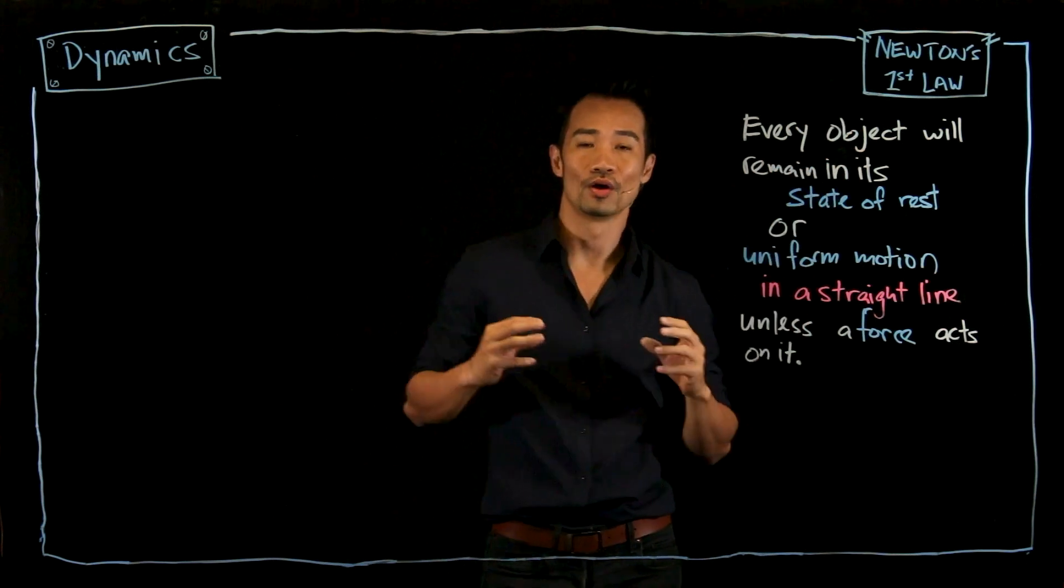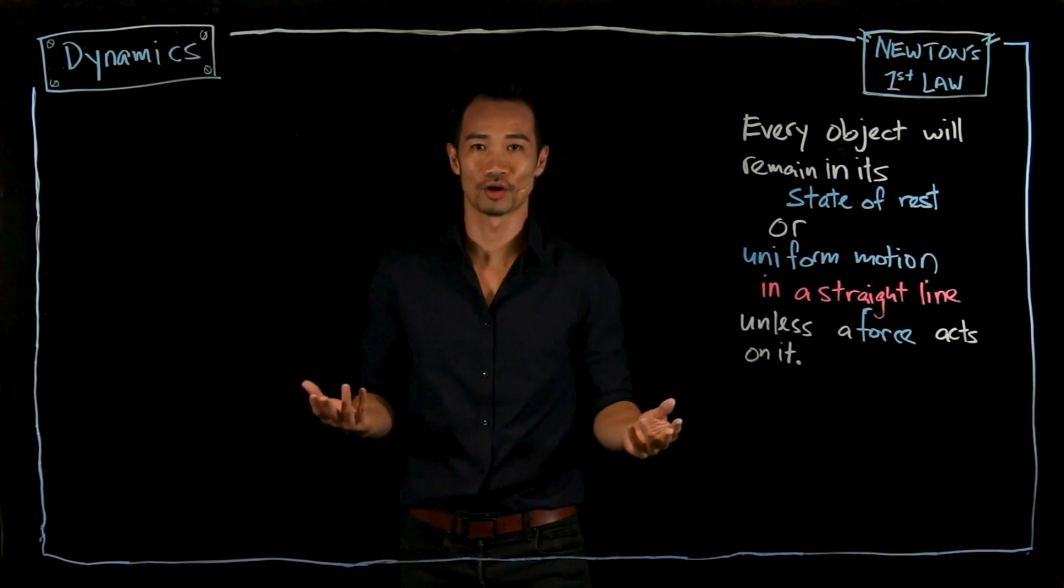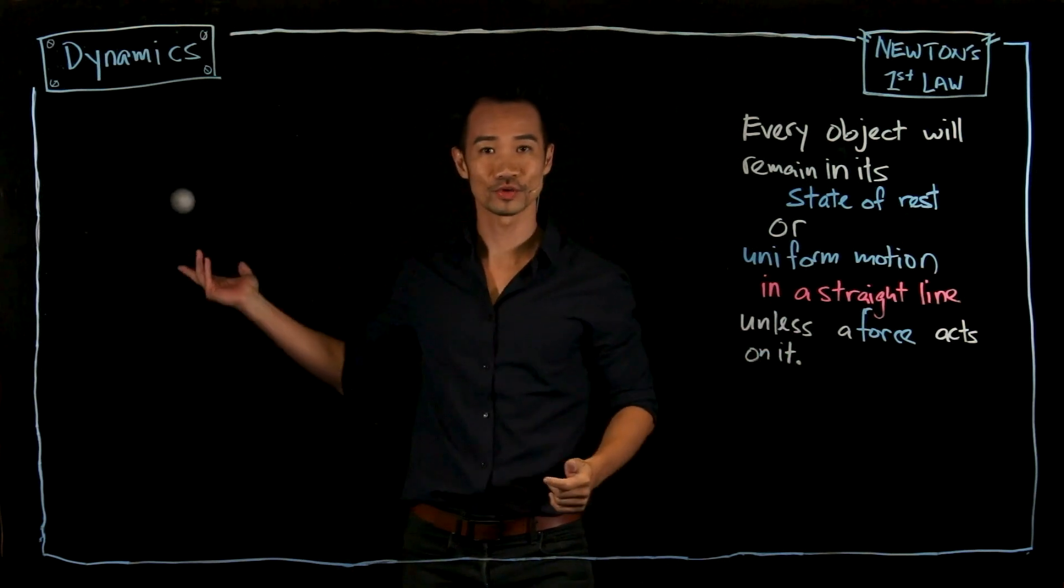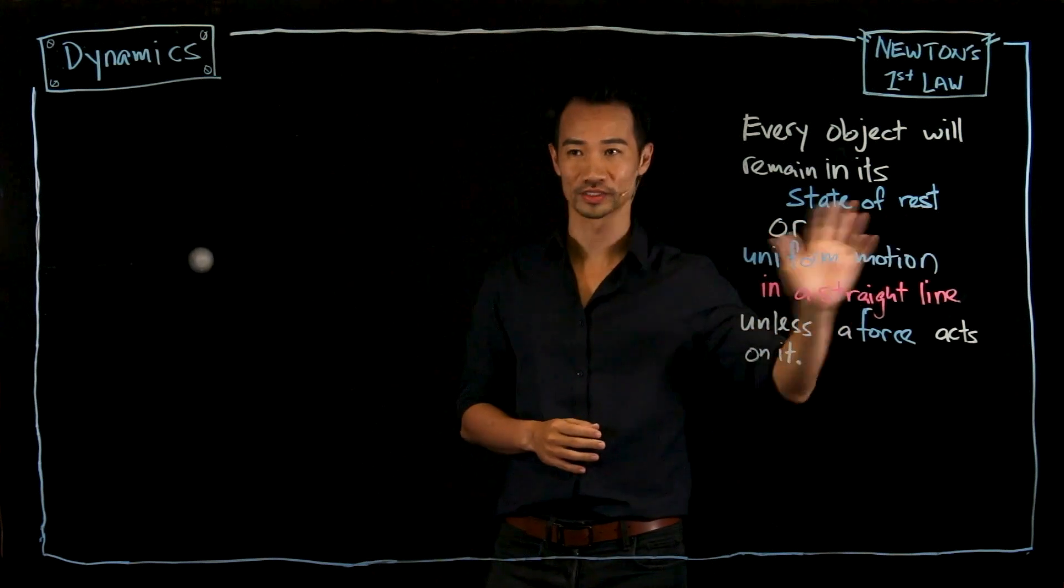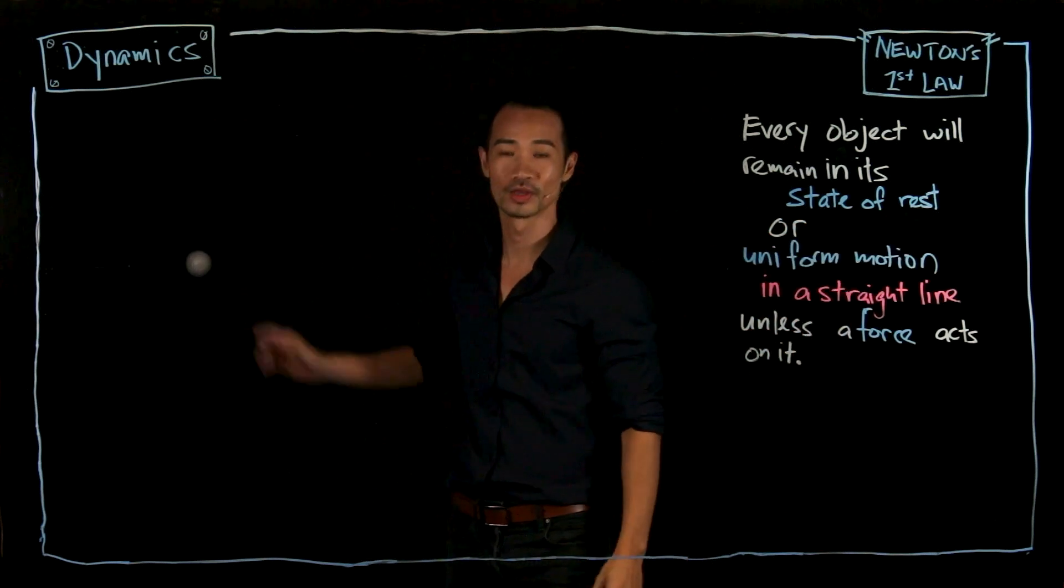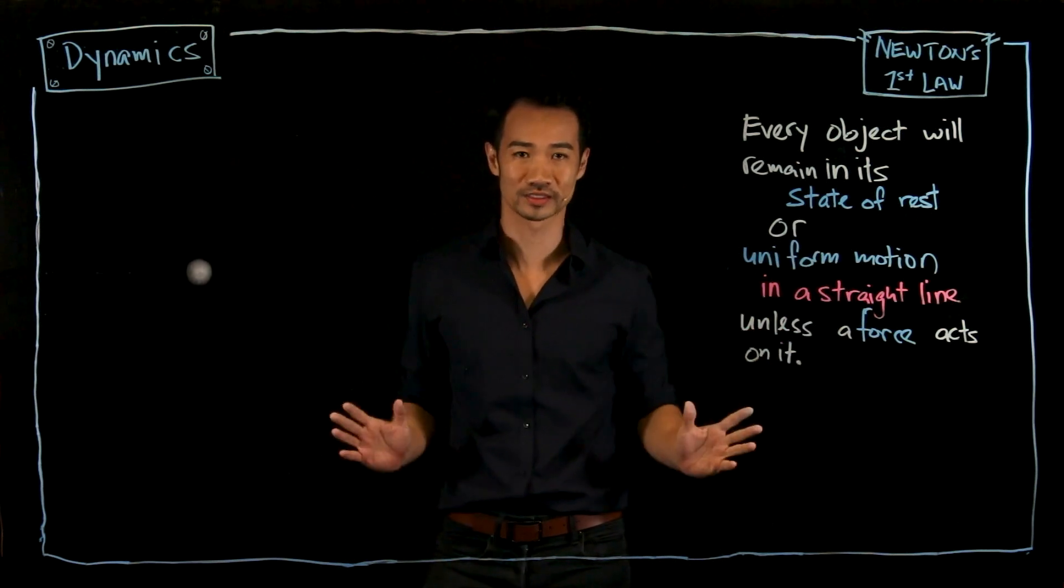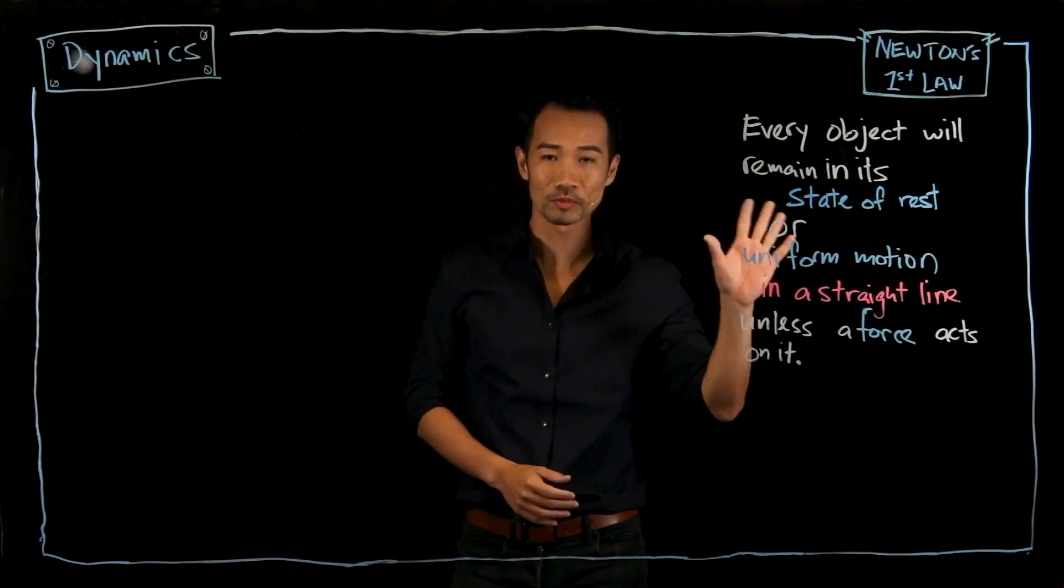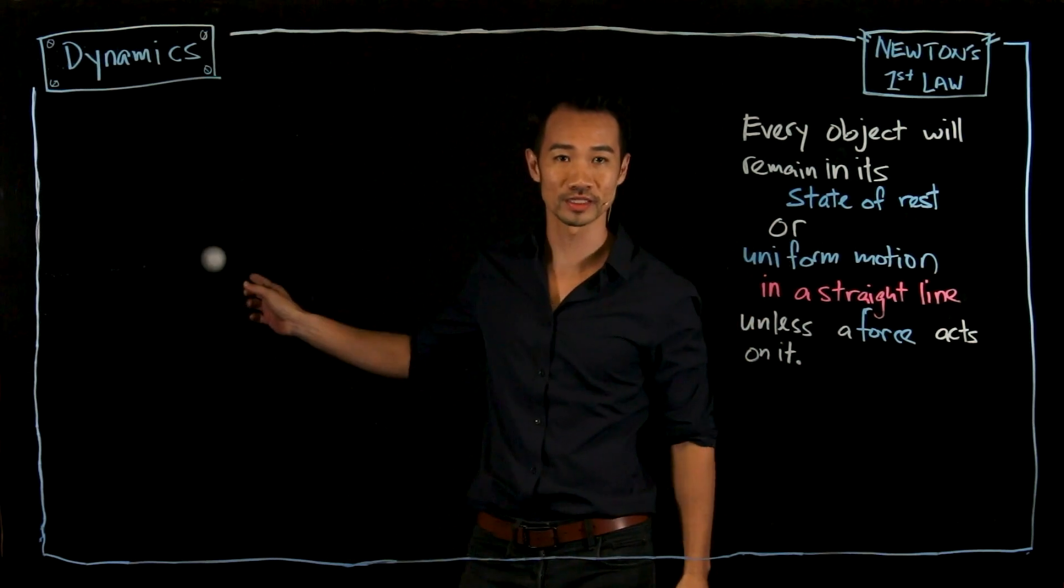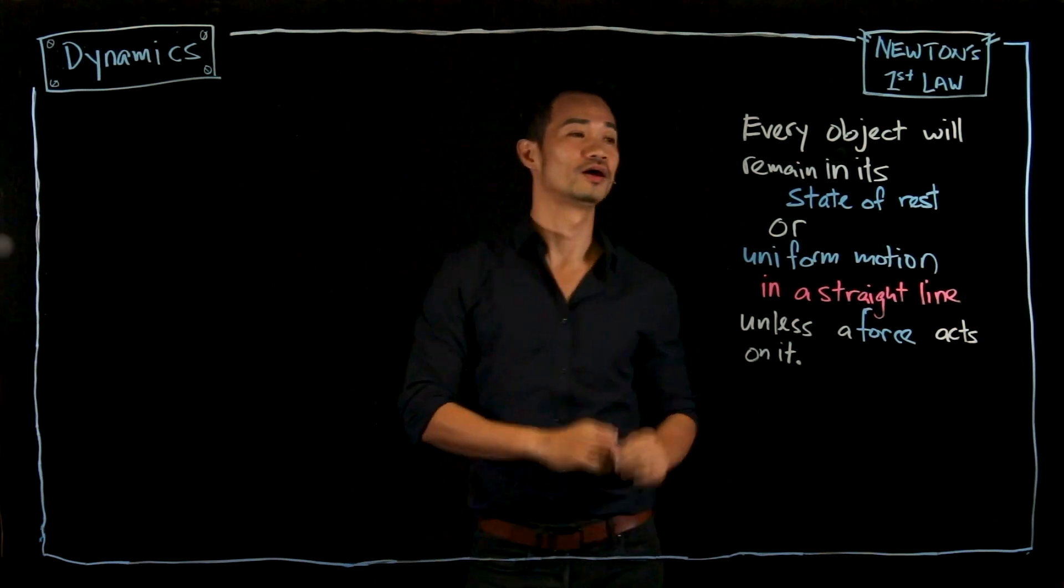I'm going to break it down to you on what forces do. First of all, let's bring in our object. So let's say if we have an object here, and the object is in its state of rest, means that it is staying here. So it's going to stay here until eternity unless there is a force. So one more time, every object will stay in its state of rest unless there is a force.